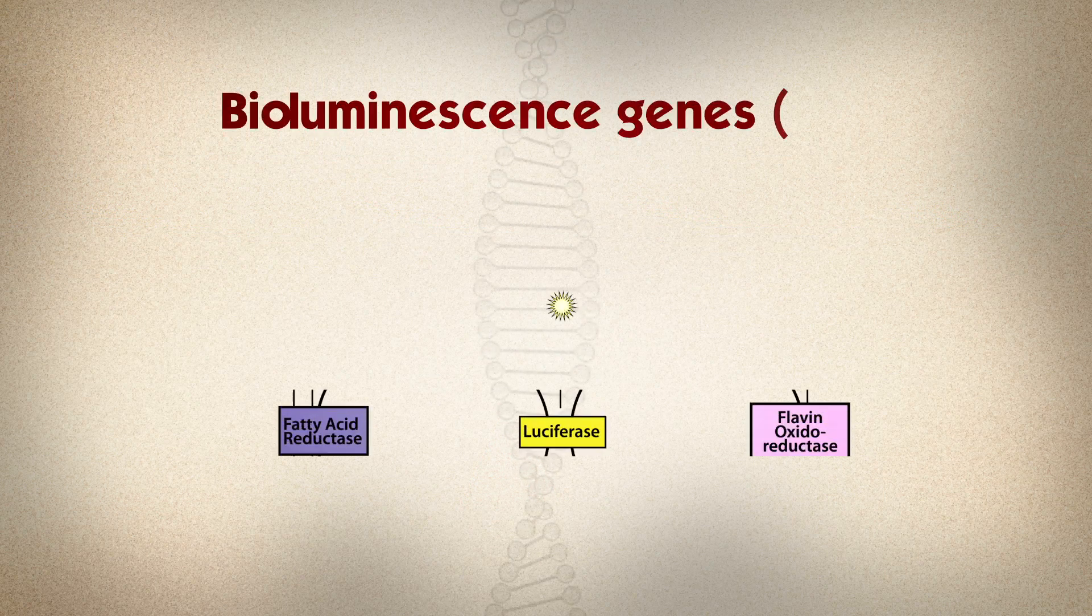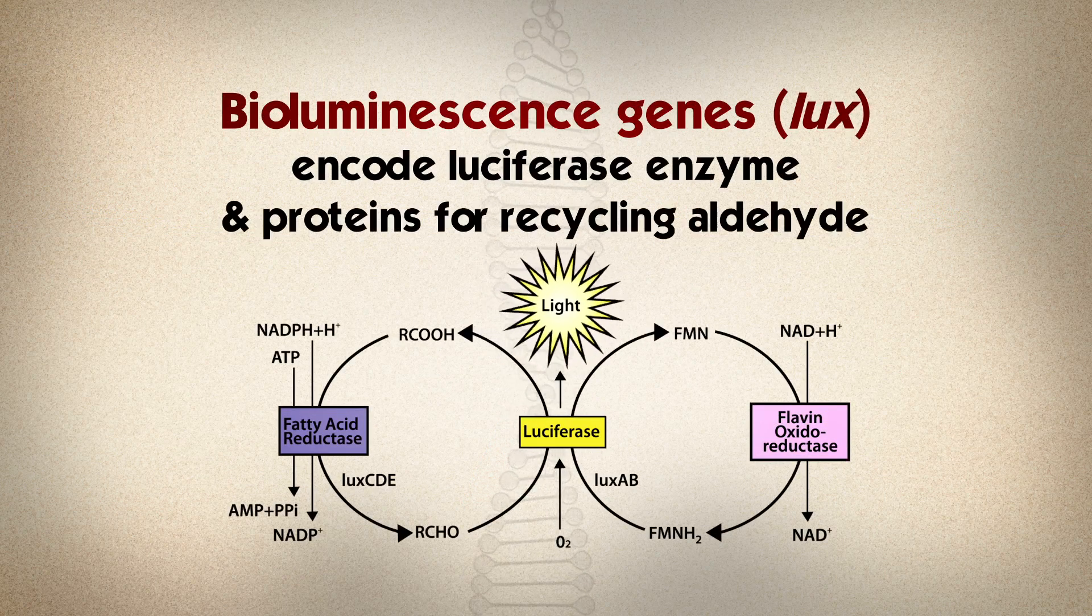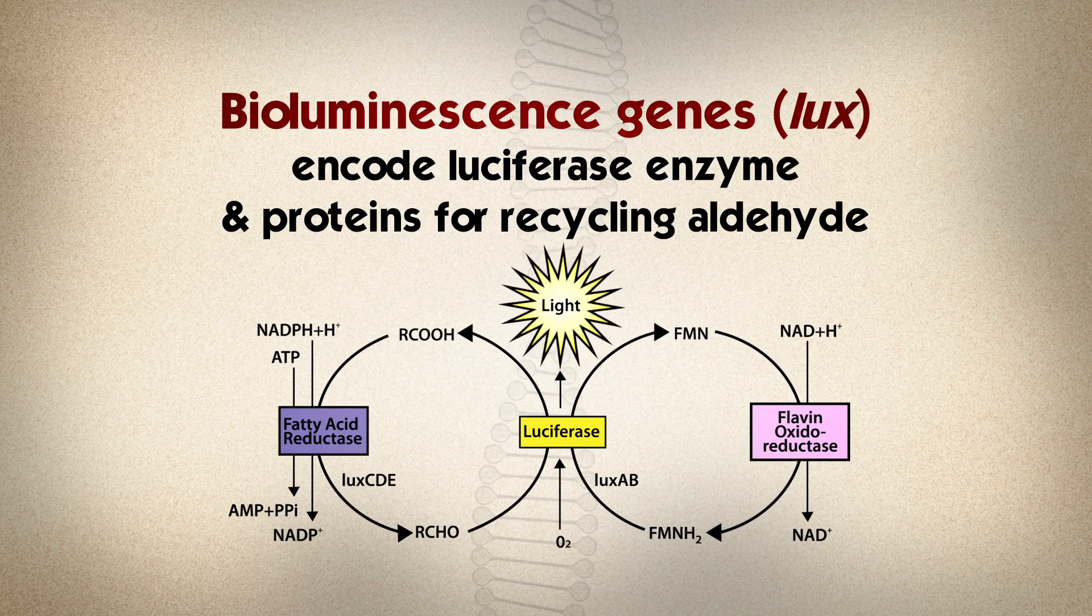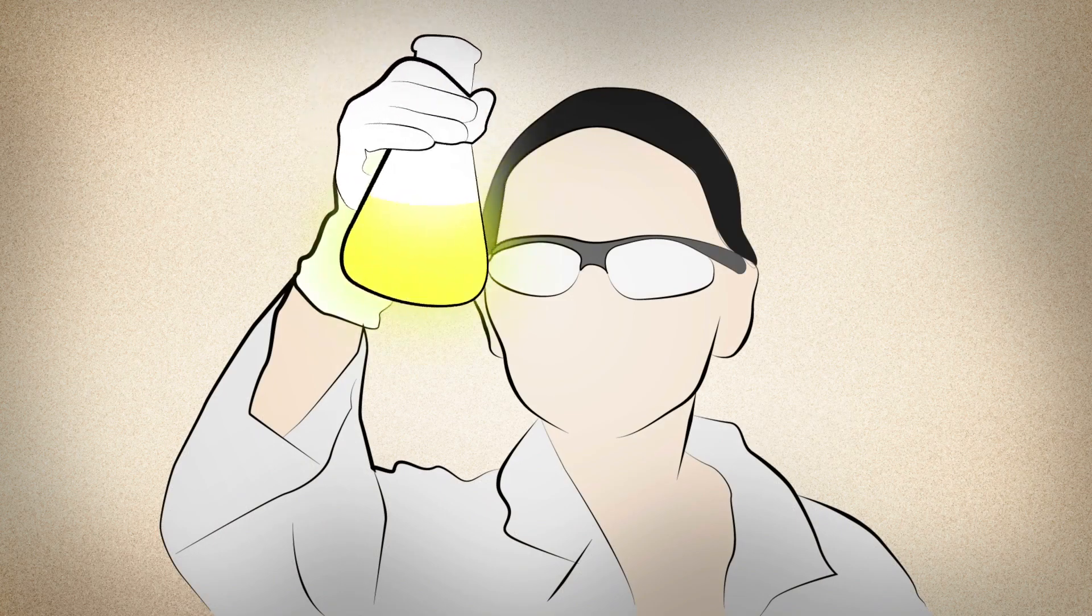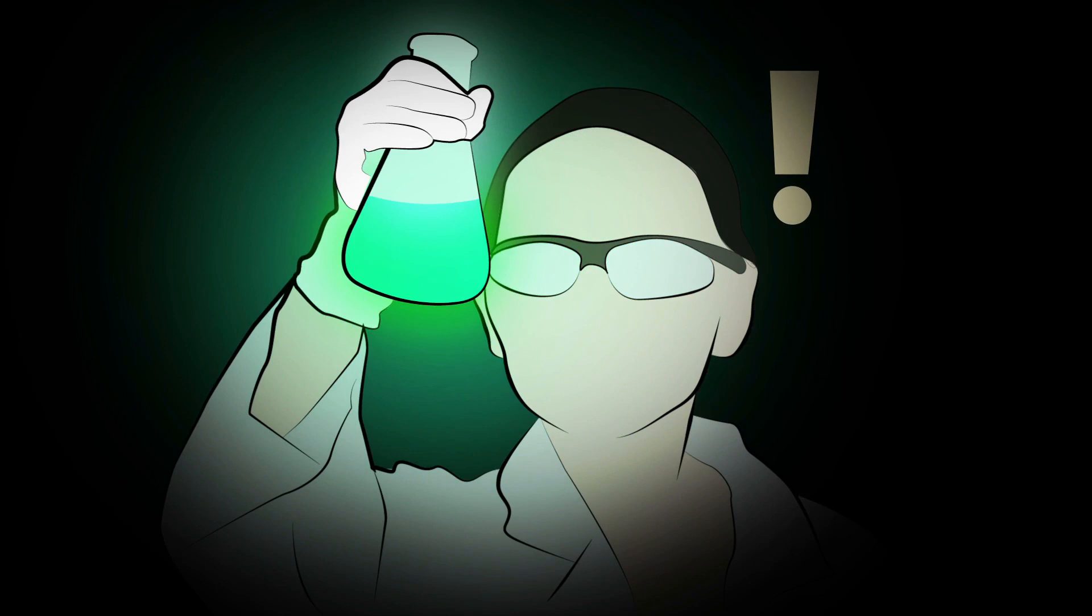Vibrio fischeri glow because they have genes for producing light using a simple chemical reaction. Scientists growing Vibrio fischeri in the lab notice something quite interesting: the bacteria only switch on their light when they have reached a critical density.